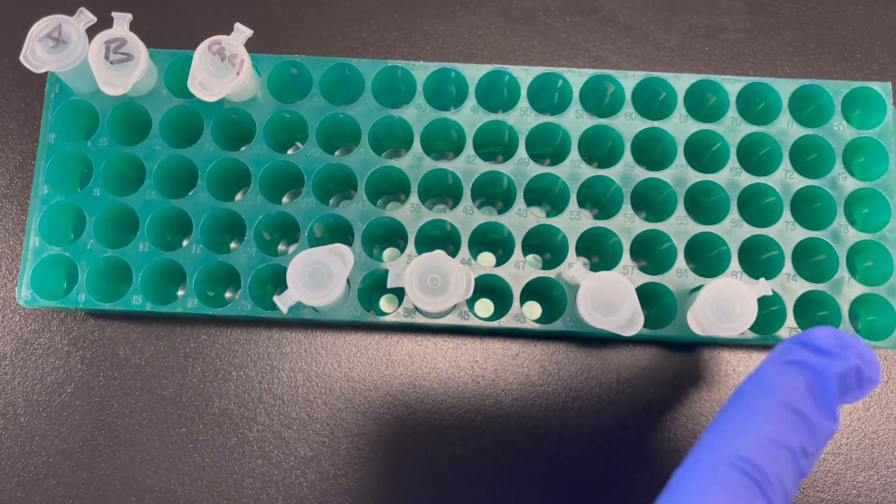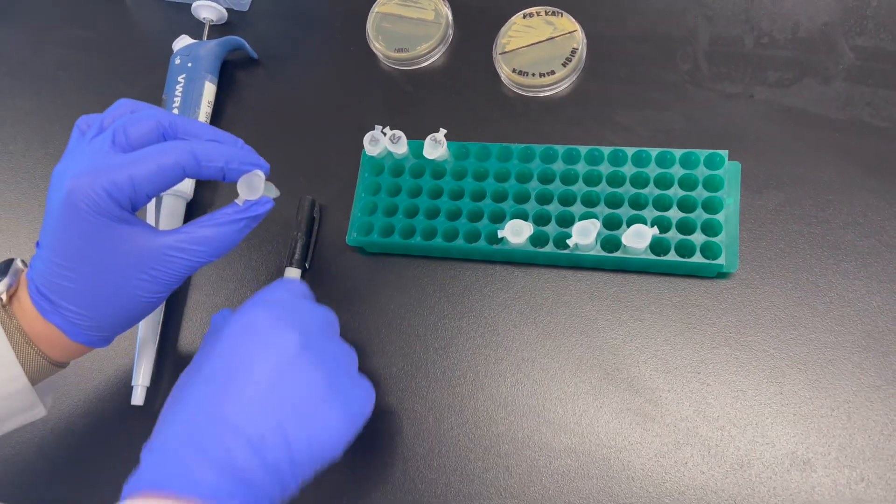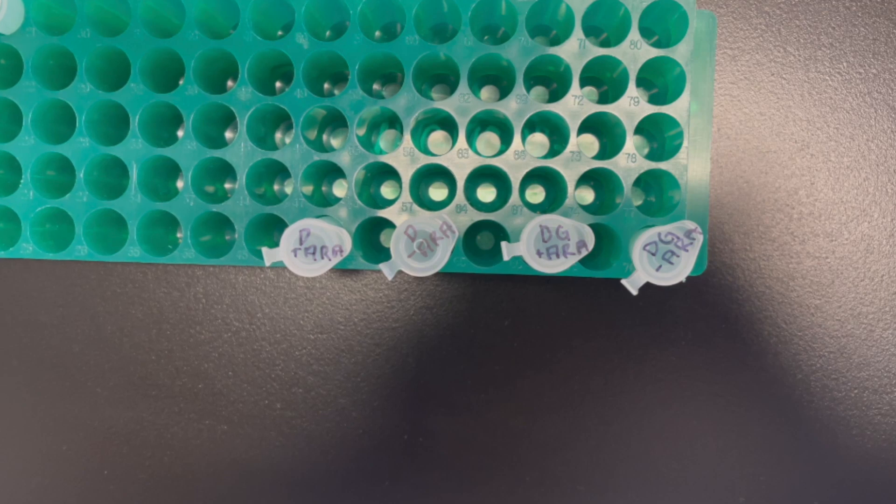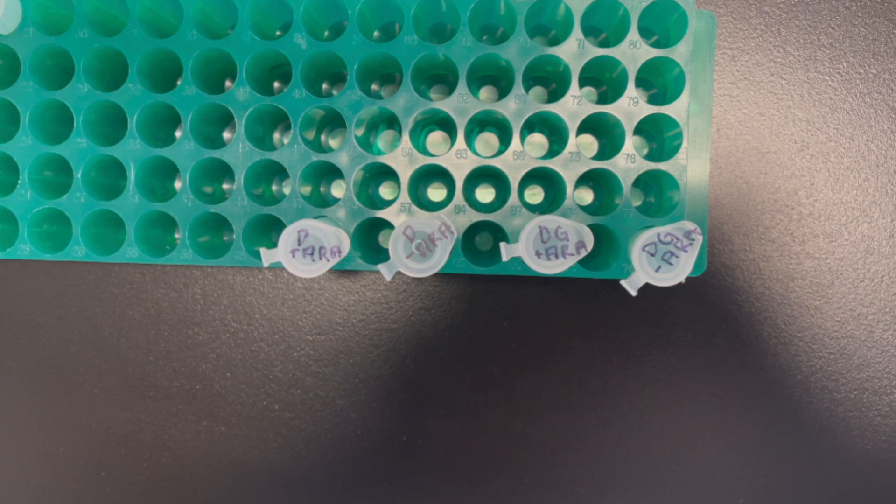You will also need four Eppendorf tubes. Next you want to grab your sharpie and label the four tubes. So the first tube you want to label it D plus ARA meaning that there is arabinose in it. The second tube is D minus ARA which is there's no arabinose.